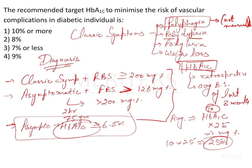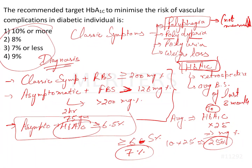That is the importance of HbA1c. If the patient has HbA1c more than or equal to 6.5%, the patient is called diabetic. The recommended target for HbA1c to minimize the risk of vascular complications in diabetic individuals should be 7% or less — it again depends on the type of diabetes, but generally it should be 7% or less. Sometimes 7.5% or less is also used. Out of the given options, 7% or less is the best option, making the third option the correct answer.